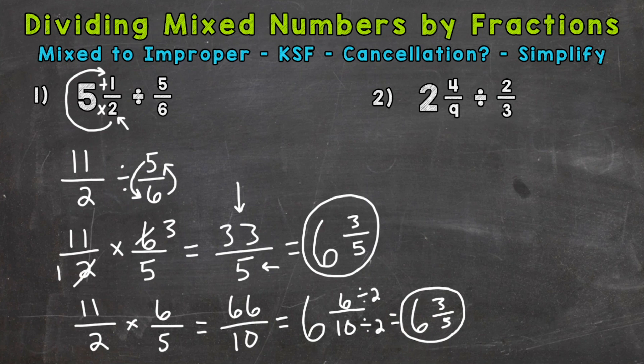All right. So on to number 2 where we have 2 and 4 ninths divided by 2 thirds. So first thing, mixed number to improper fraction. So we'll start at the bottom. Multiply and add. So 9 times 2, 18. Plus 4, 22. Keep our denominator of 9 the same. Divided by our fraction of 2 thirds.